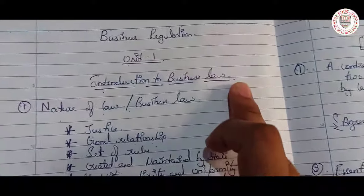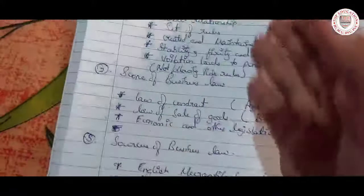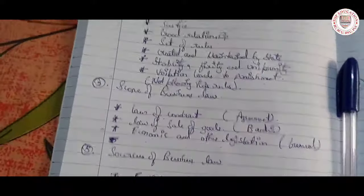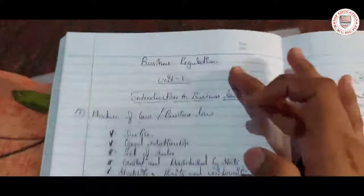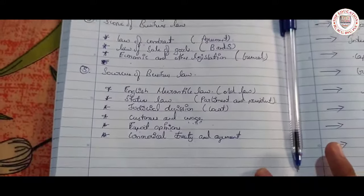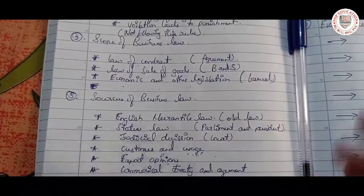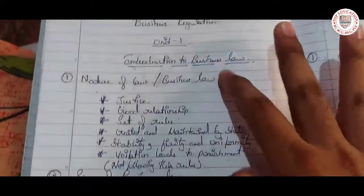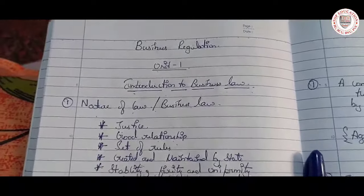This was an overview of the introduction to business law. This topic may come for 14 marks, 6 marks, or 2 marks, so be thorough with it — it is the simplest chapter of business regulation. All the best guys, do well. Thank you for watching. If you like this video, please subscribe to our channel and share it with your friends.